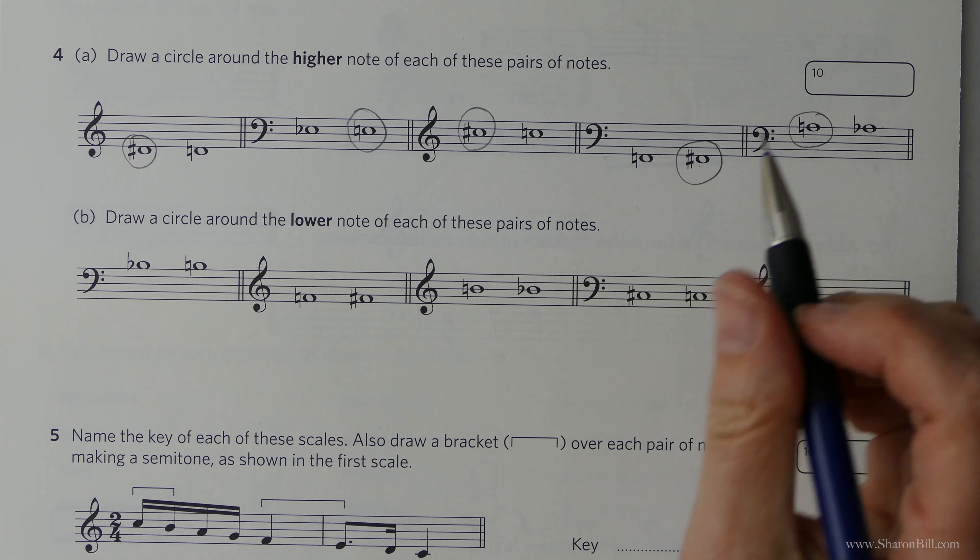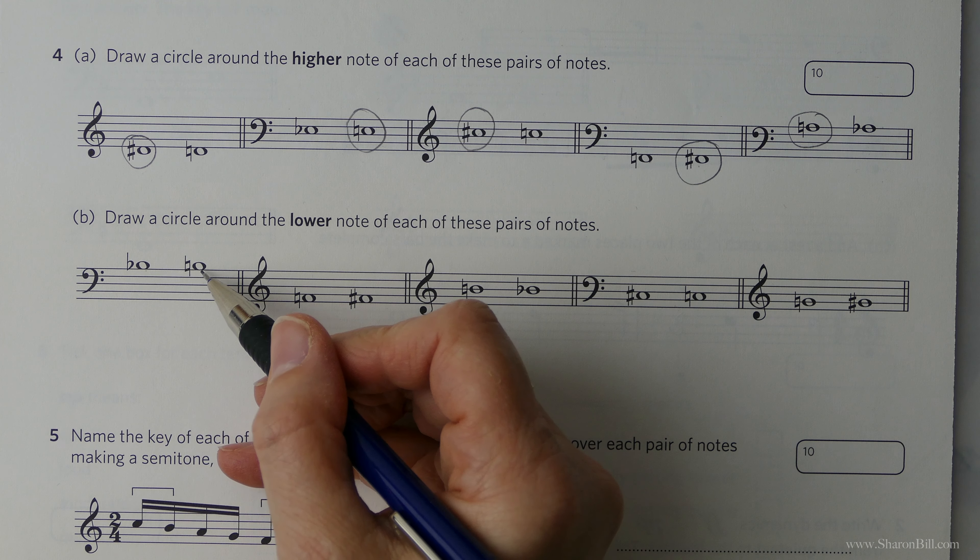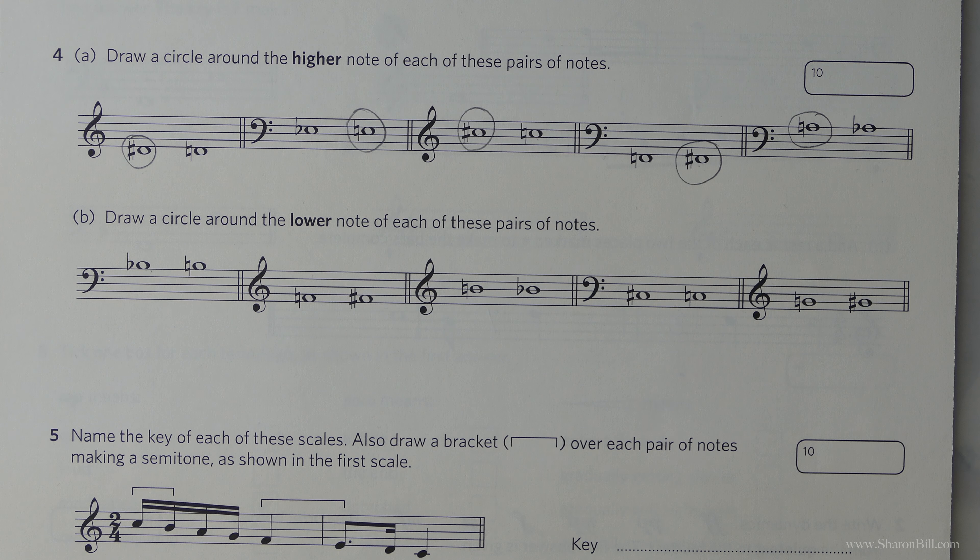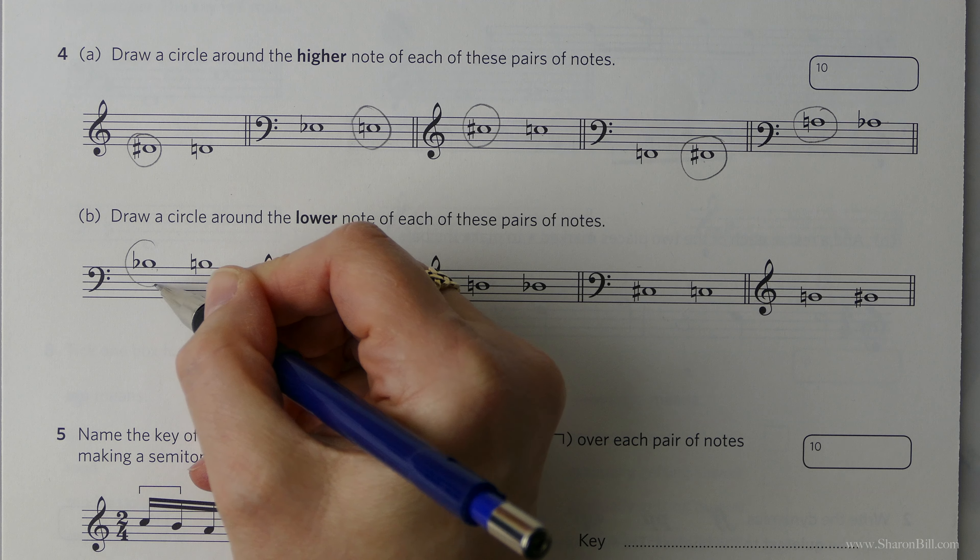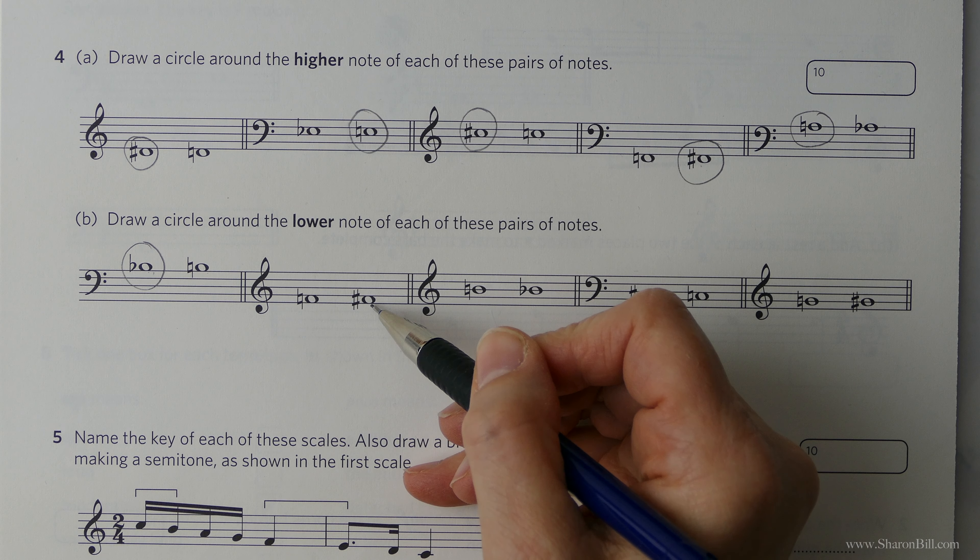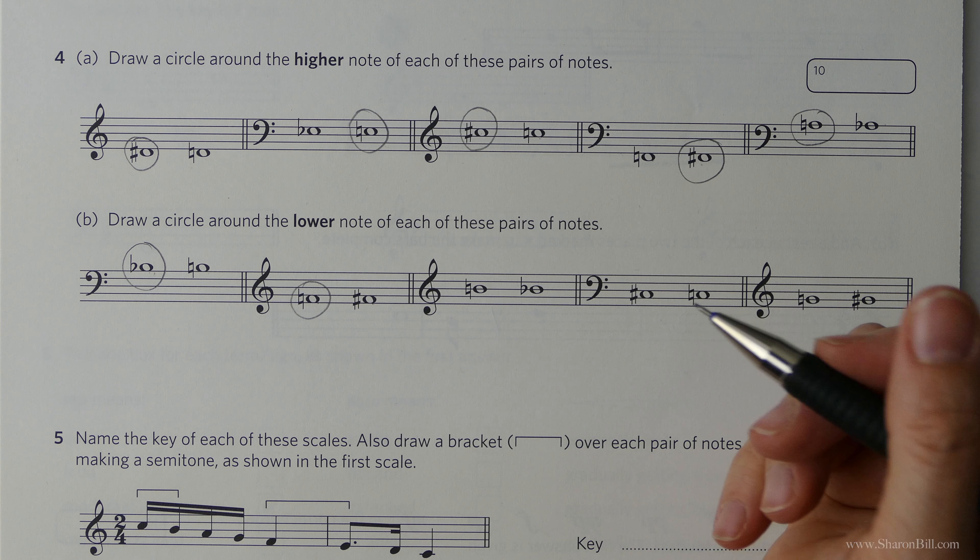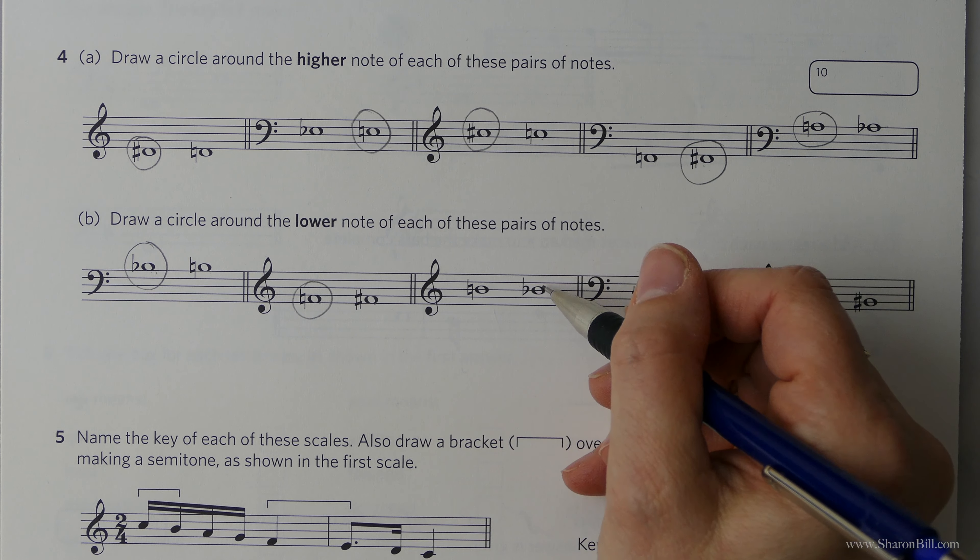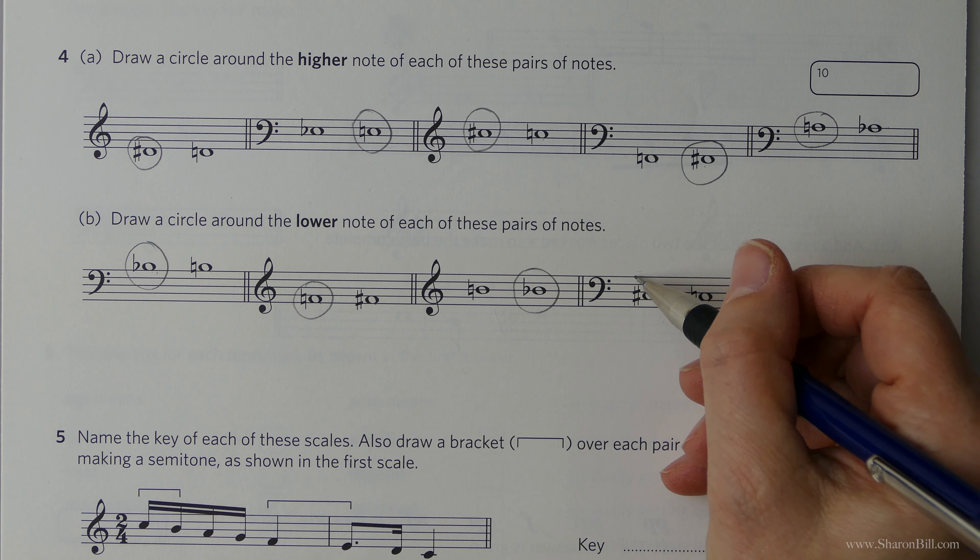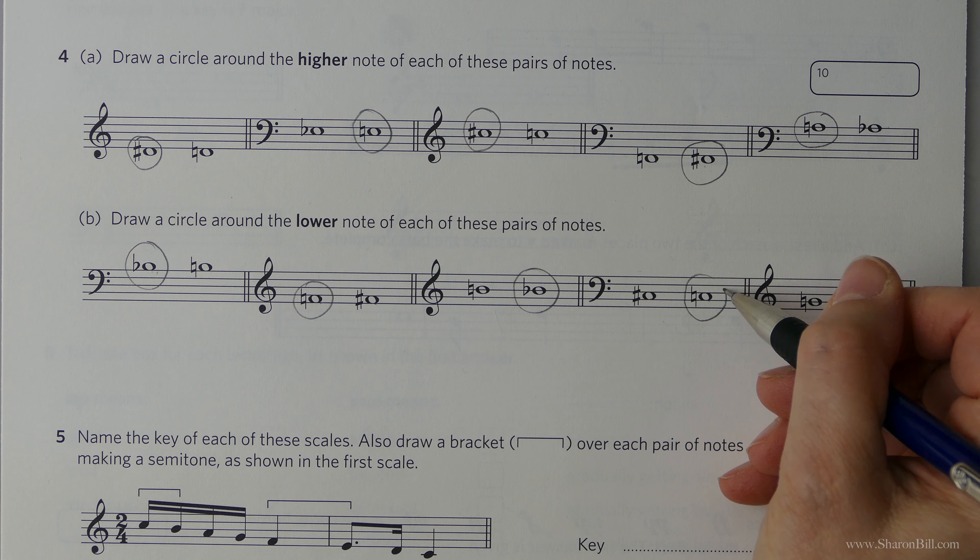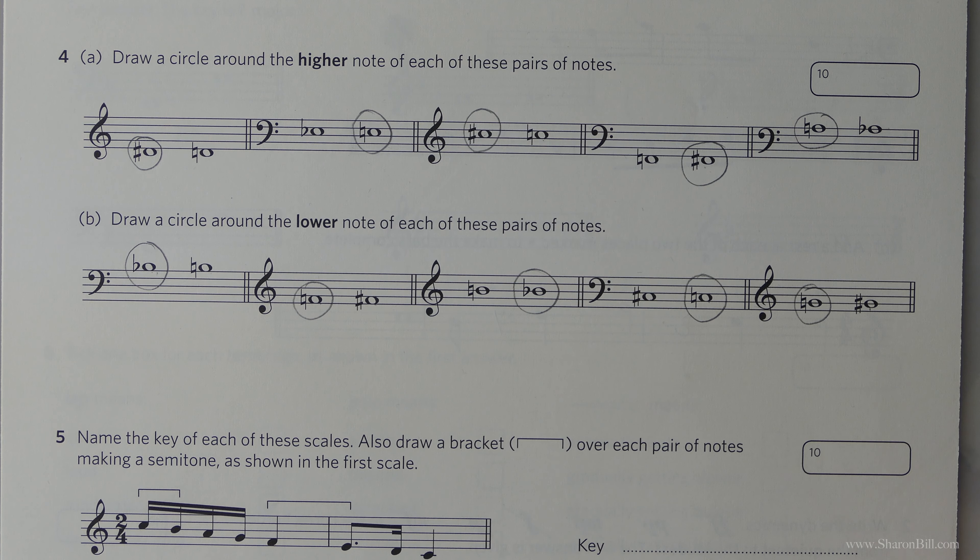And now we have similar sort of thinking. But this time we need to draw a circle around the lower note of each of these pairs of notes. And so we know a flat lowers by a semitone. So we have a B natural or a B flat. And we know that the flat lowers. We can see B natural, B flat. We know the flat lowers by a semitone. And that's the lower of the pair. So we will circle that one. And so we know that if a sharp raises by a semitone, the natural must be the lower of the pair. So we know that a flat lowers by a semitone. So B flat will be lower than B natural. We know that C sharp is higher than C natural because the sharp raises. And so the natural is the lower of the pair. And so here again, G natural is lower than G sharp. So that's that one soon done.